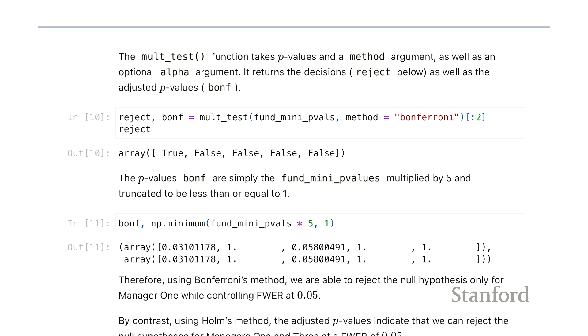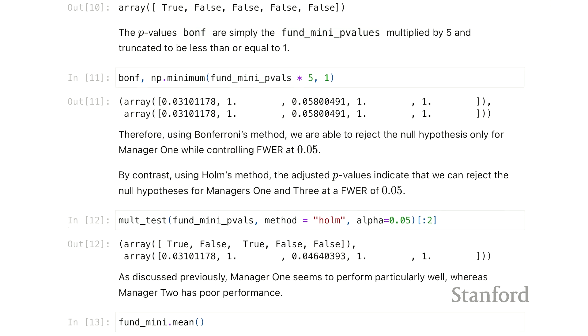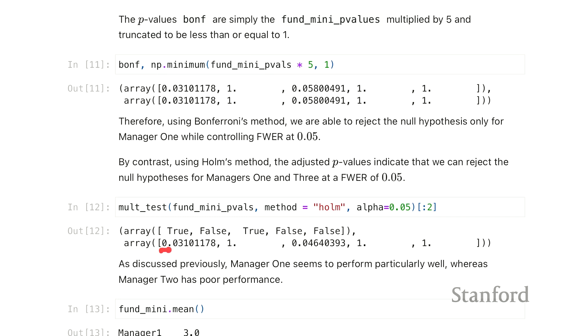The next method is this Holmes method, which works under similar conditions for Bonferroni, but is known to be slightly more powerful. So we use this multi-test function. This is the multiple test function from the stats model package. We give it a set of p-values, and we say how to adjust the p-values. We get out of that decisions, like whether to reject the null hypothesis or not, as well as the adjusted p-values.